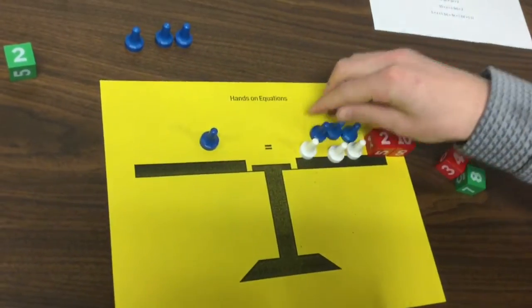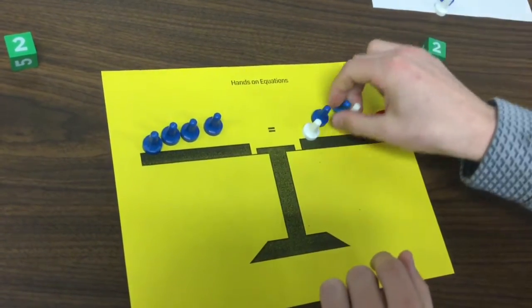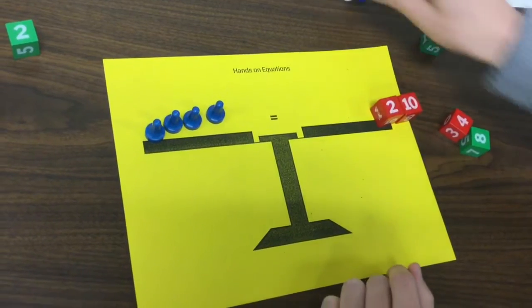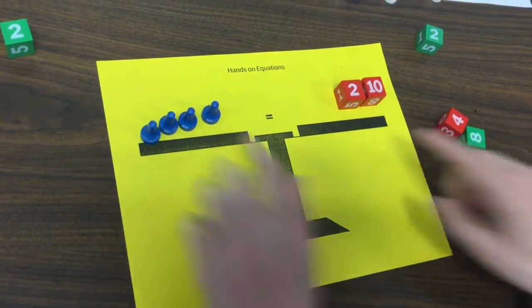So we're going to add 3x's to each side, and these are pairs of 0s, so 1 pair of 0, 2 pair of 0, 3 pair of 0. So 12 divided by 4 is 3, so x equals 3.